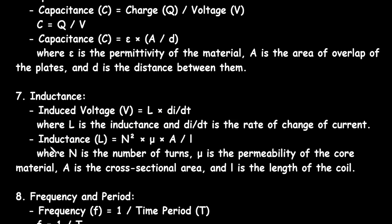Next is inductance. Inductance is represented by capital L, and it is equal to N squared into Mu into A, divided by L. Where N is the number of turns, Mu is the permeability of the core material, A is the cross-sectional area, and L is the length of the coil.